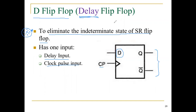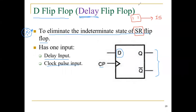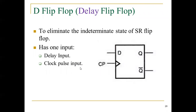Why do we use the D flip-flop? The answer is to eliminate the indeterminate state of the SR flip-flop. When S=1 and R=1 in the SR flip-flop, it produces an indeterminate or forbidden state. To avoid this, we move to the delay flip-flop. A question may also be: how do we get a D flip-flop from an SR flip-flop?